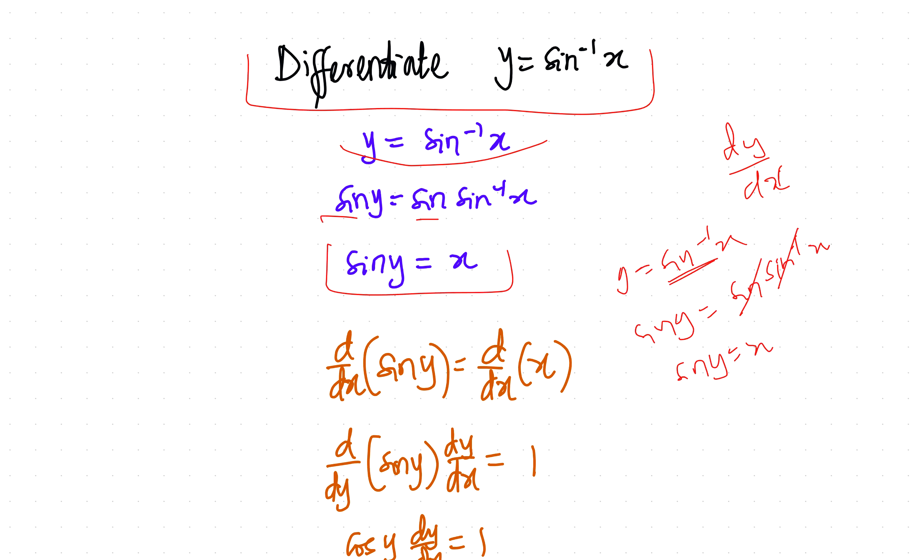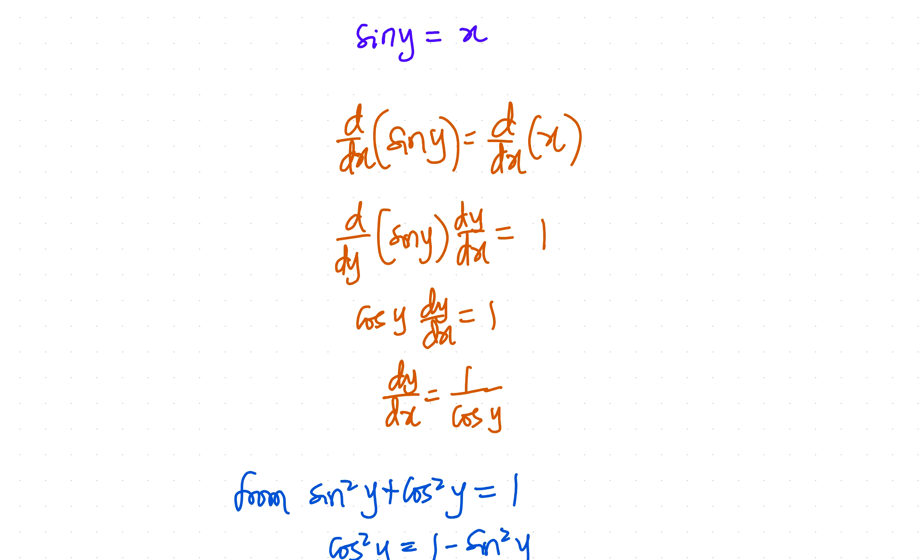Okay, so the next thing we need to do, since you are looking for dy dx, is to take d dx of both sides. So you have sine y equals x. So you take d dx of sine y and d dx of x. That's you differentiating both sides. But as you can see here, this is sine y, not sine x.